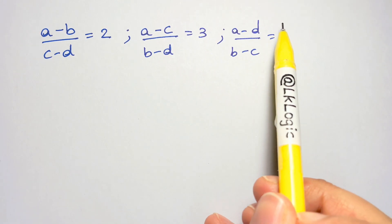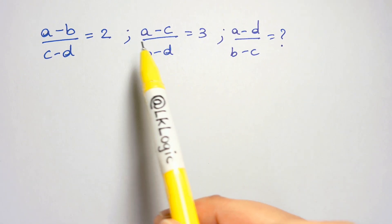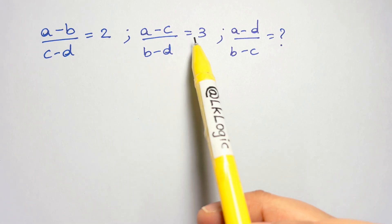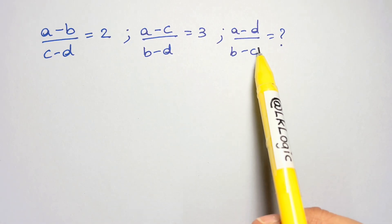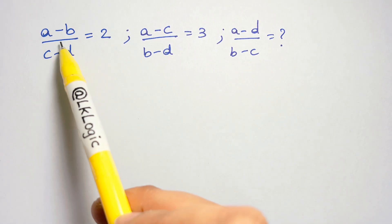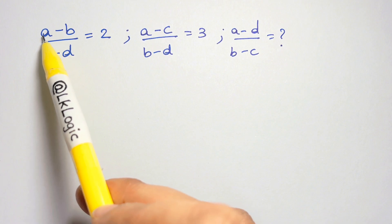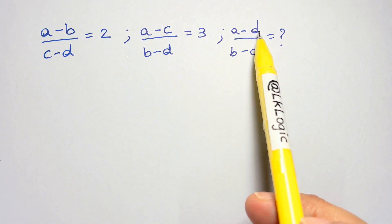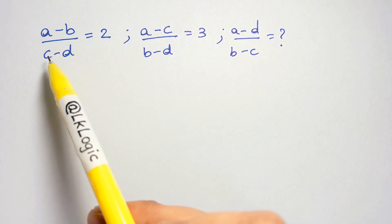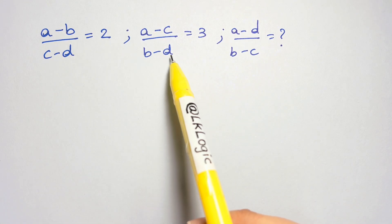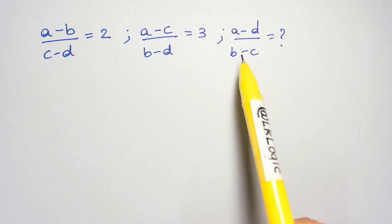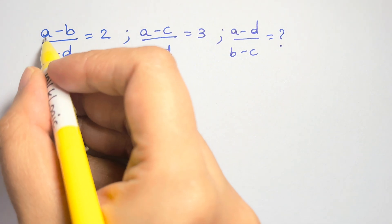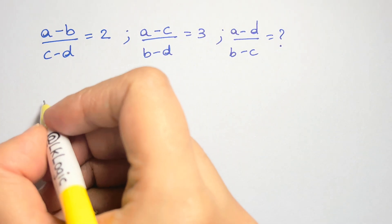We have a nice math olympiad problem. This term is equal to 2, this is equal to 3, and we have to find out what this expression equals. As you can see, we have terms involving a minus d, c minus d, b minus d, and b minus c.